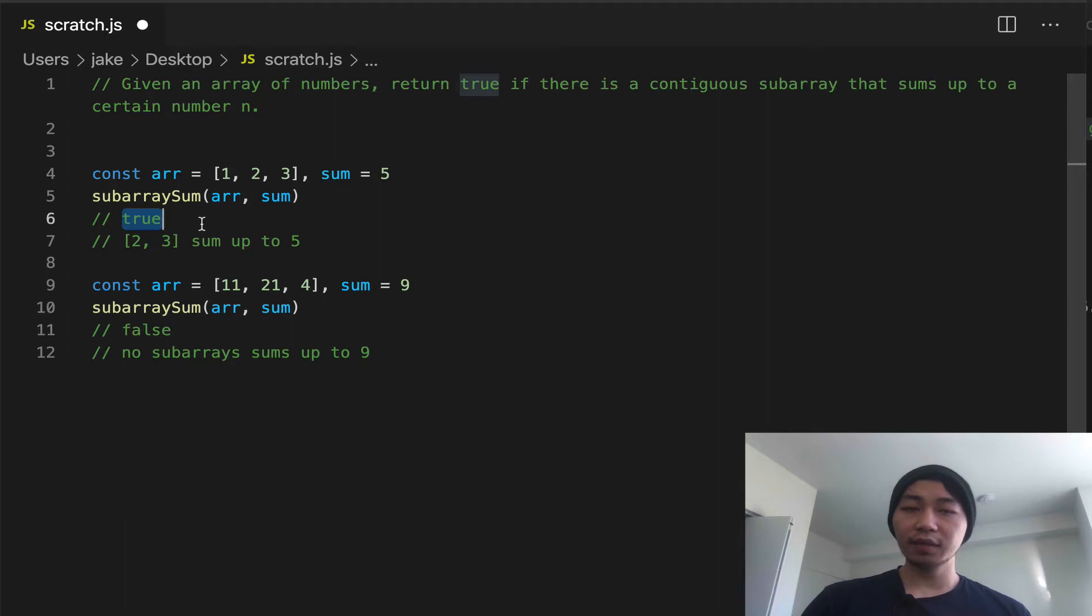There is a contiguous subarray that sums up to a certain number n. Contiguous means that the numbers are right next to each other. And so we know that 2 and 3, which is a subarray with numbers that are contiguous, meaning continuing and right next to each other, 2 plus 3 equals 5. And so we know that there is a sum that sums up to 5.